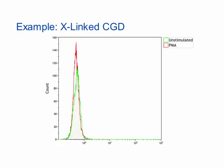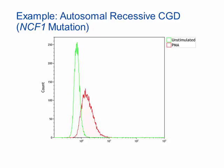This slide is an example of the DHR test in a male patient with X-linked CGD. As you can see, the green and red histograms for unstimulated and stimulated samples completely overlap, indicating an absence of neutrophil oxidative burst due to defective NADPH oxidase function.